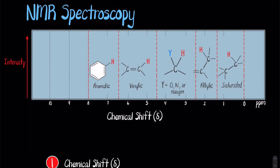Nuclear magnetic resonance spectroscopy is single-handedly the most useful technique to organic chemists. It complements other spectroscopic and spectrometry analytical techniques by mapping the molecule's precise carbon-hydrogen framework. In today's video, I'm going to be discussing how first and second year organic chemistry students can use NMR spectroscopy to determine molecules from a spectrum.